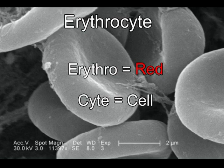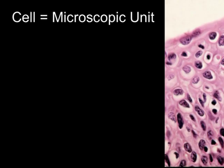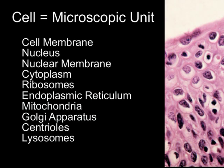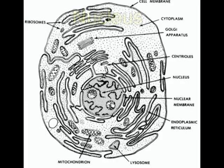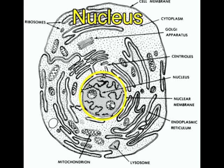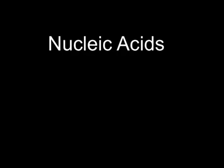A cell is the microscopic unit of body organization. A typical animal cell includes a cell membrane, a nucleus, a nuclear membrane, cytoplasm, ribosomes, endoplasmic reticulum, mitochondria, Golgi apparatus, centrioles, and lysosomes. The nucleus plays a central role in the cell — information is stored in the nucleus and distributed to guide the life processes of the cell. This information is in a chemical form called nucleic acids.